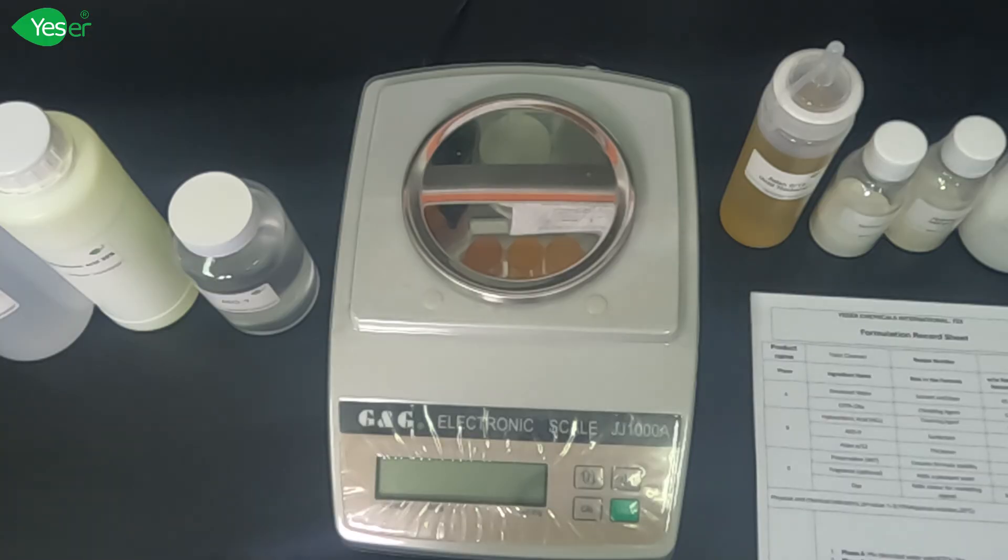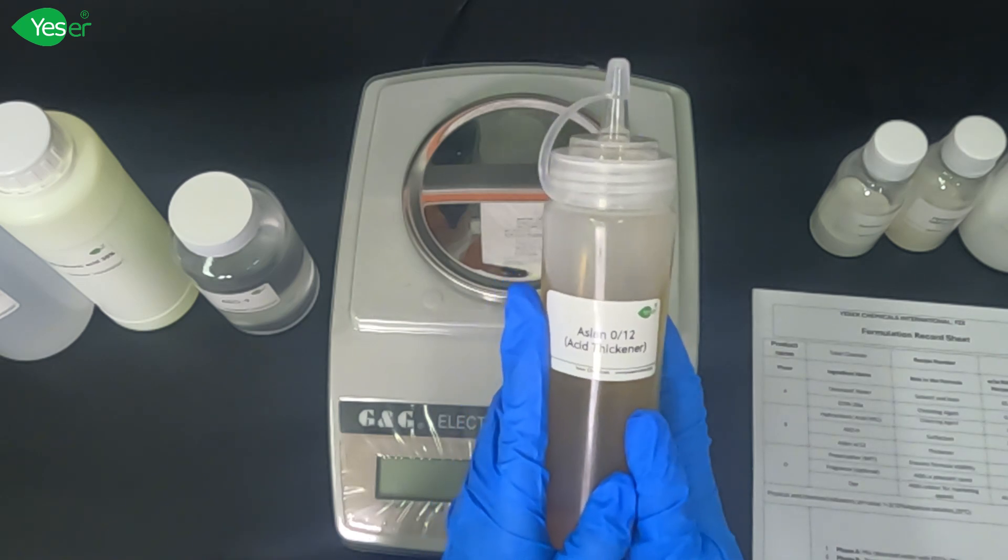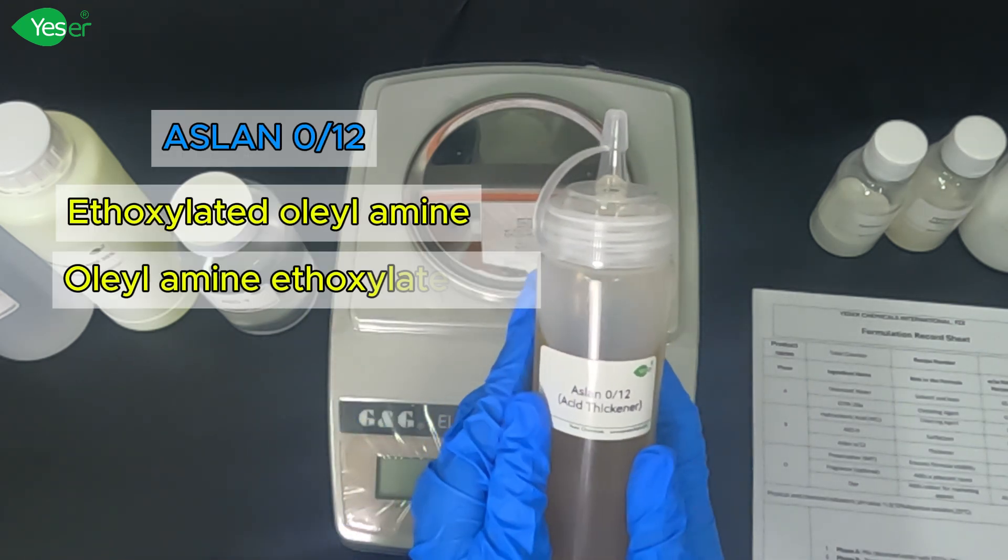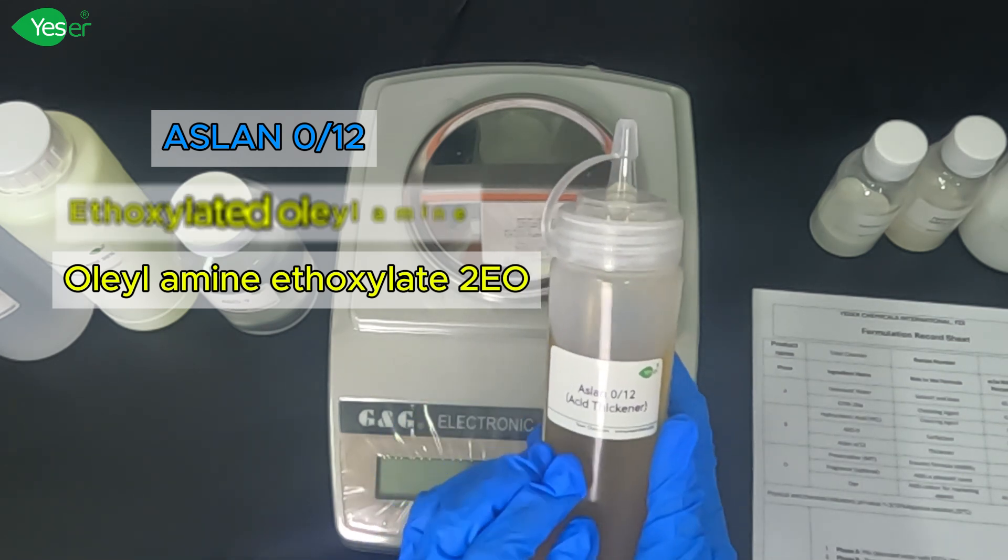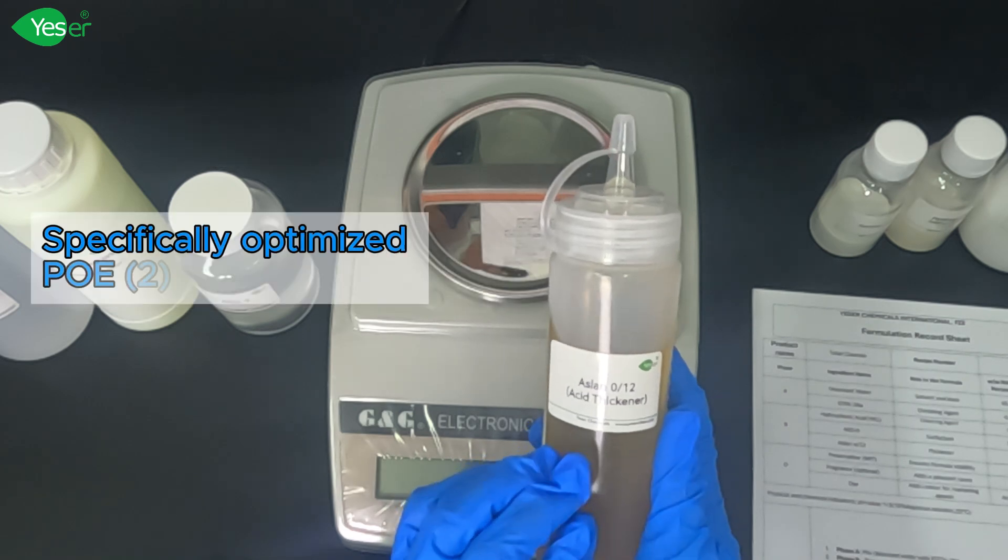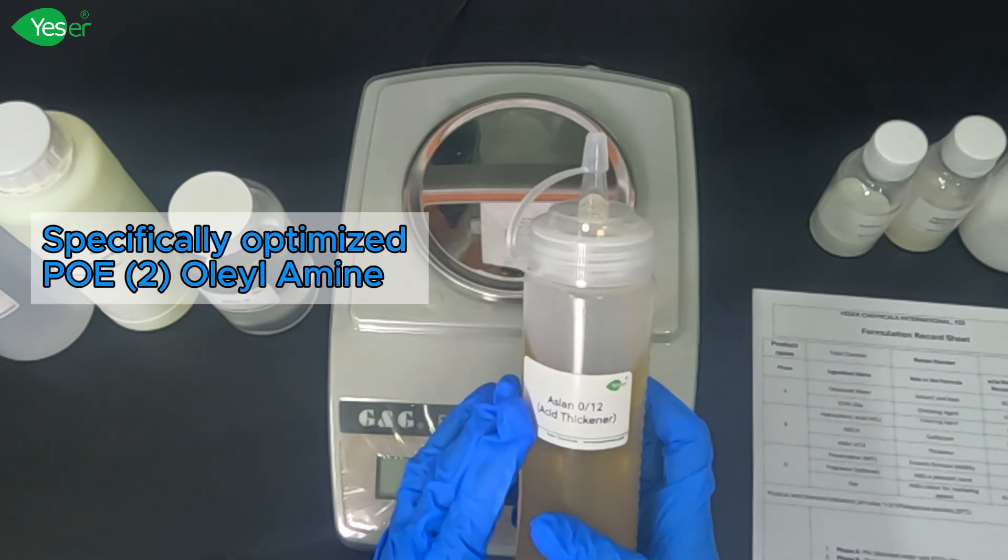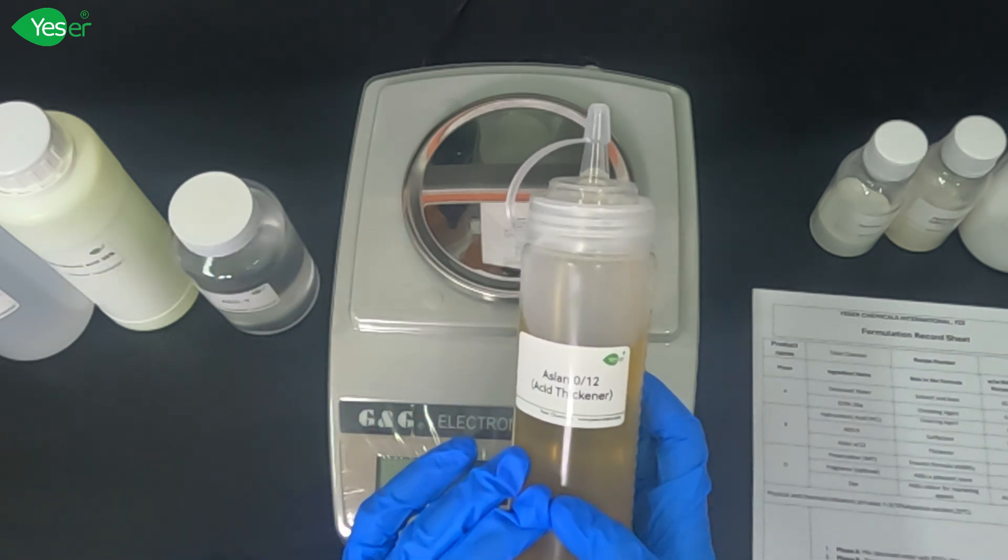We will have four different thickeners to compare their performance and efficiency in our acidic-based formulation. The first one is Aslan 012, also known as ethoxylated oleylamine, or oleylamine ethoxylate 2EO. This is a specifically optimized PoE2 oleylamine. It's a perfect thickening agent for many inorganic or organic acidic formulations, especially for strong acidic systems.